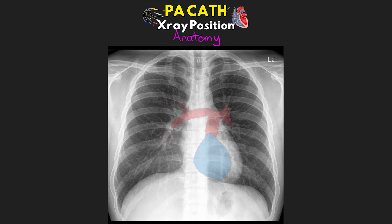It is important to keep in mind the relation of the pulmonary arteries compared to the airways. The pulmonary arteries are not always seen, but the airways are usually much easier to identify. The main pulmonary artery typically begins just below and ends just above the left main stem. The left pulmonary artery can be found above the left main stem airway because it goes up and over. The right pulmonary artery branches with the right upper lobe pulmonary artery traveling on top of the right upper lobe bronchus, while the right interlobar pulmonary artery sits almost directly over the bronchus intermedius.